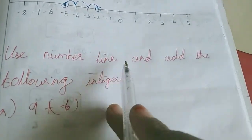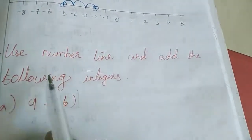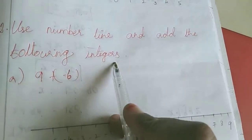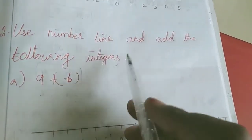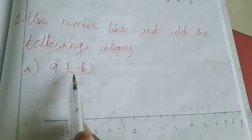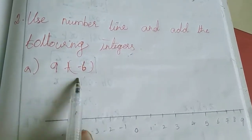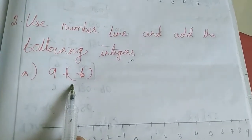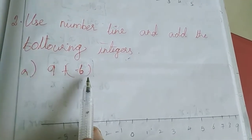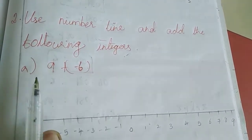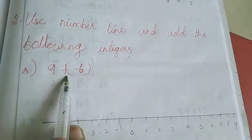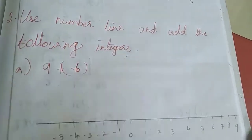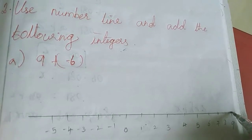Now second sum: use number line and add the following integers. Here: 9 plus minus 6. It is in symbol form, so for symbols we mark the first number. First number is 9, so we mark 9.